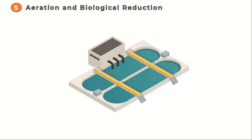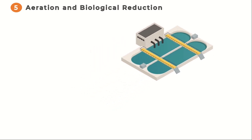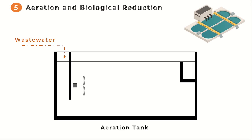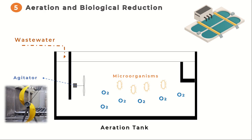The fifth step involves aeration and biological reduction. The wastewater is mixed with air and introduced to biological treatment units such as activated sludge or trickling filters. Microorganisms in these units break down organic matter, converting it into harmless byproducts, which reduces the pollutant levels in the wastewater. Agitators play a crucial role in the effective operation of anoxic tanks, ensuring proper mixing of wastewater and oxygen within the tank, which helps to remove pollutants and improve water quality.